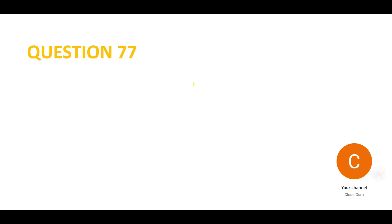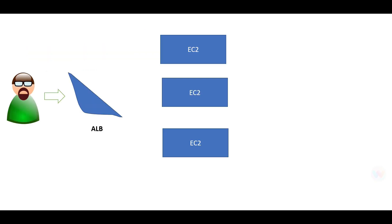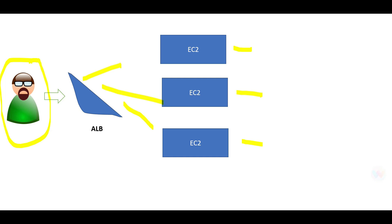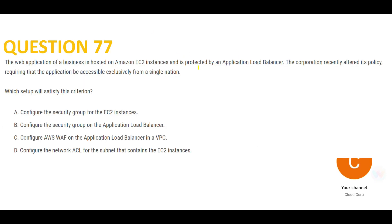Let's jump into the question. You have an application deployed on multiple EC2 instances. There is a load balancer in between and these are your users. The users will always go via the load balancer, and the load balancer will decide which EC2 instance the load should be transferred to.